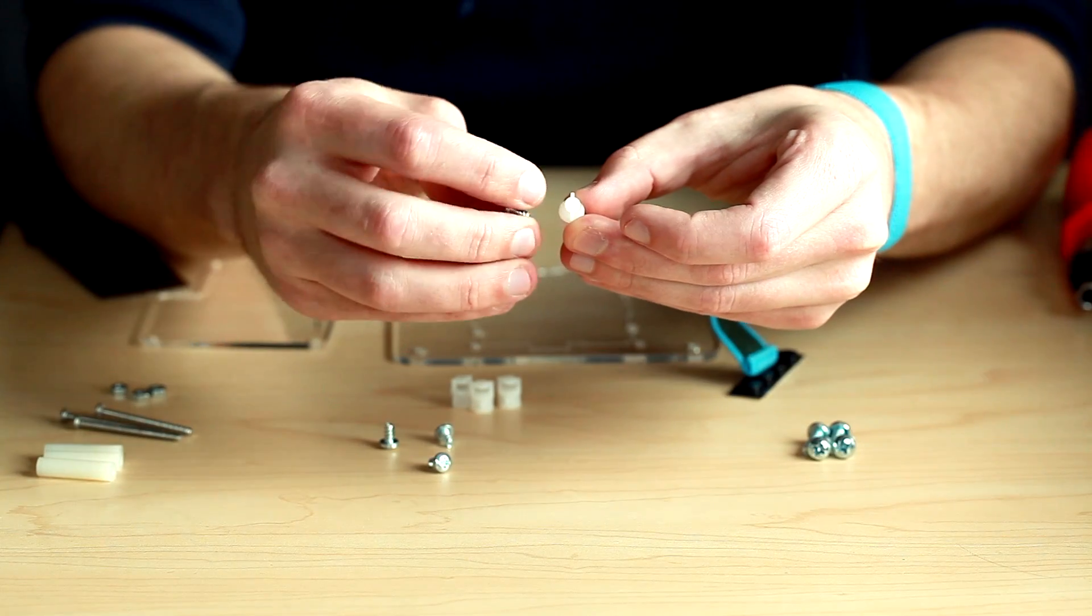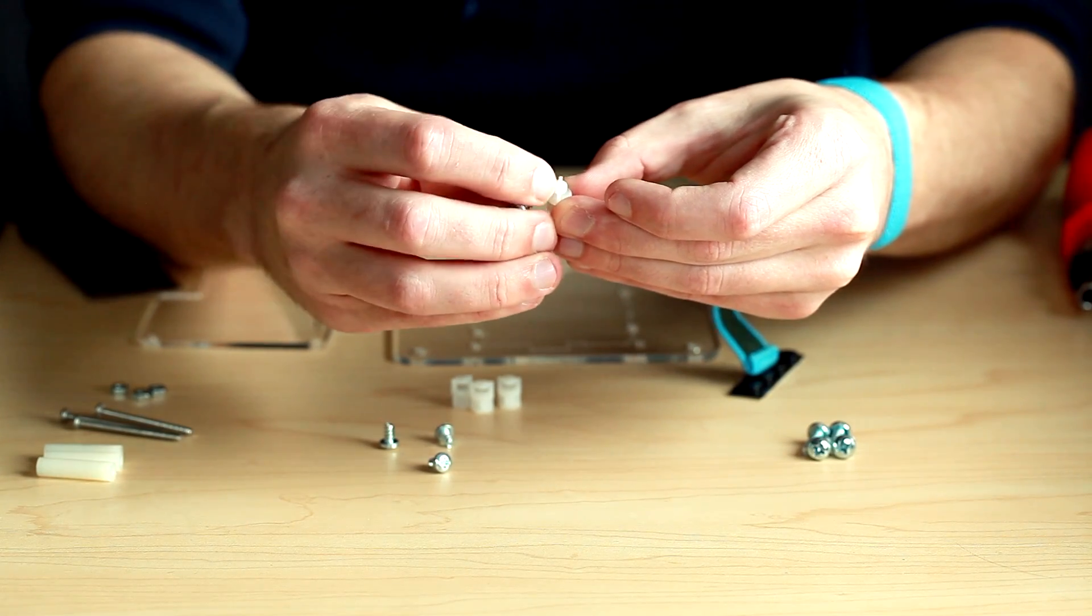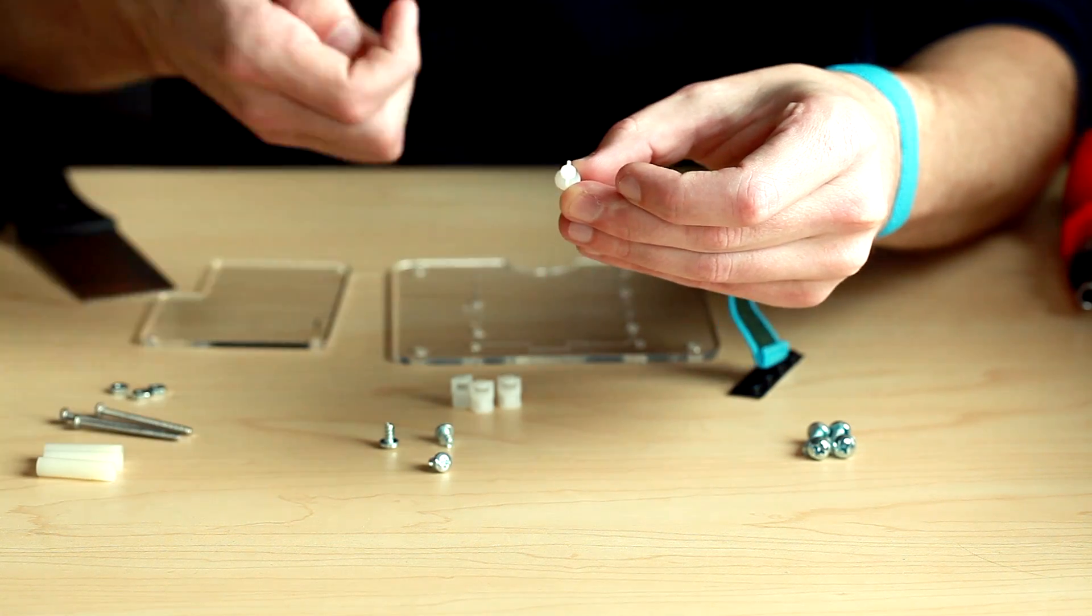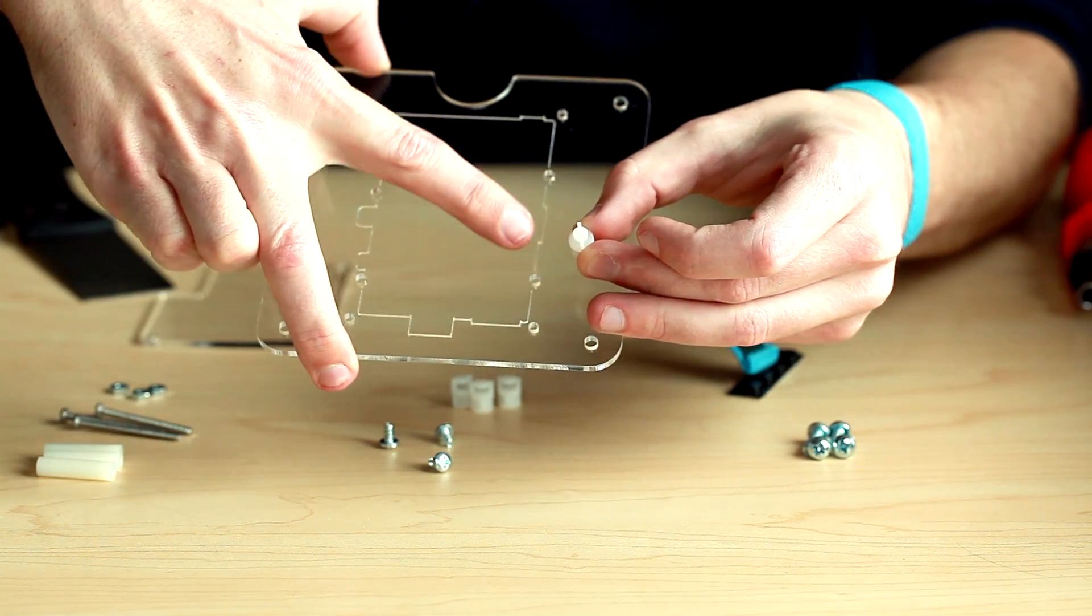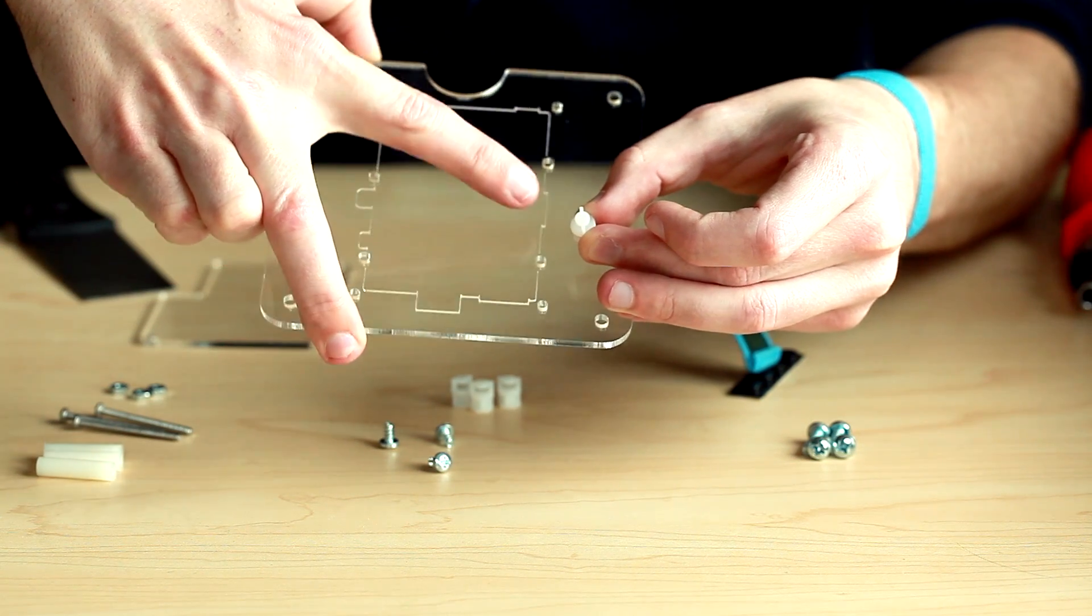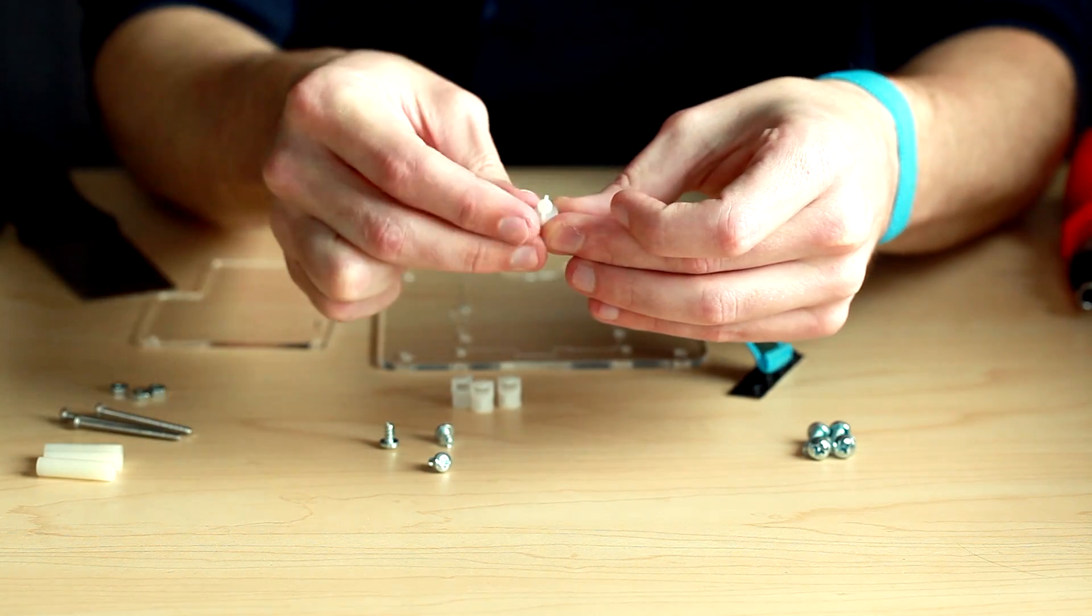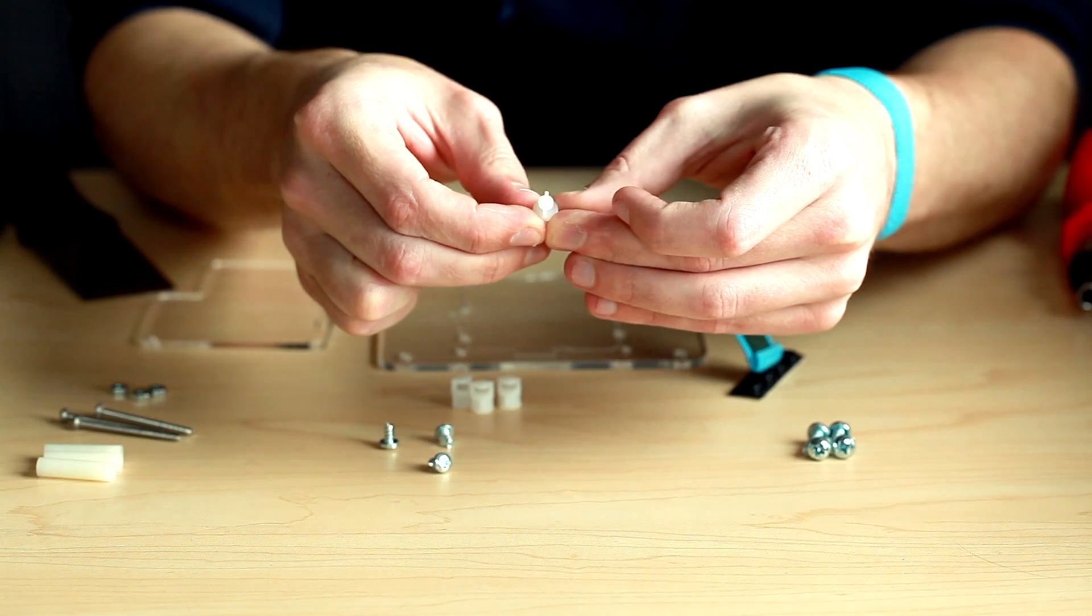So you'll want to make sure that these lines on the plastic tabs are parallel with the lines that are etched onto the board. That is what actually keeps the Pi in place.